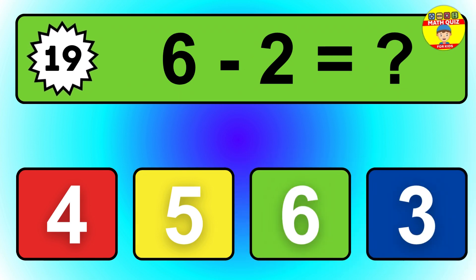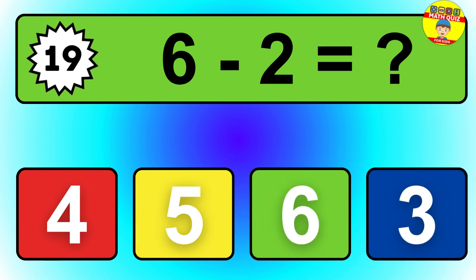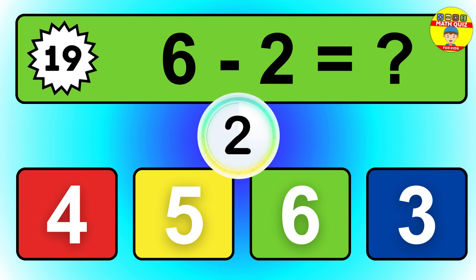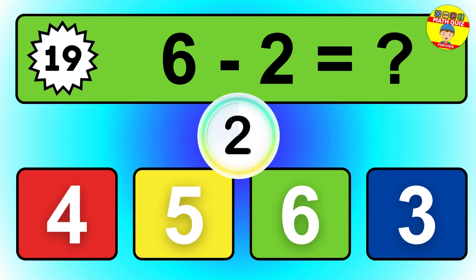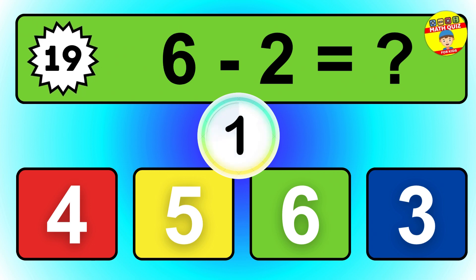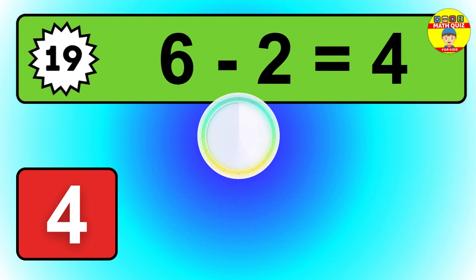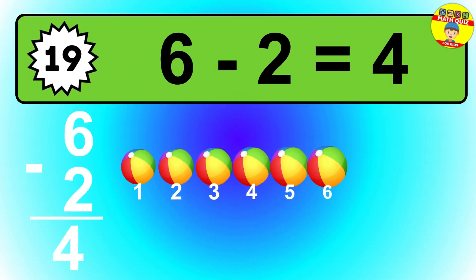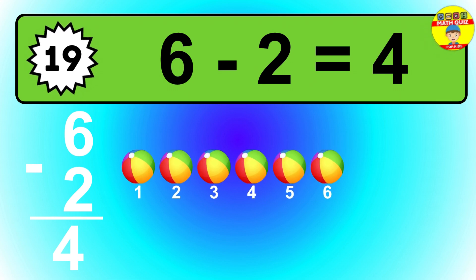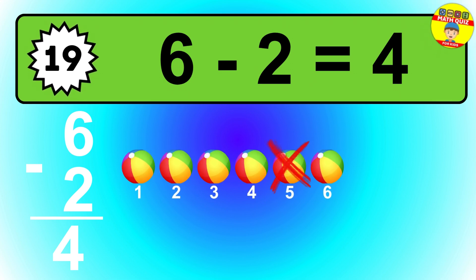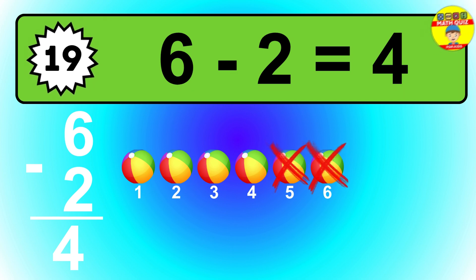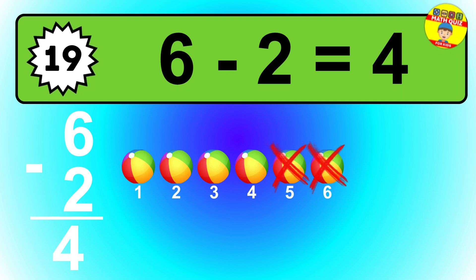Question 19. 6 minus 2 equals what? So the answer is 6 minus 2 is 4. Let's count it: 1, 2, 3, 4.